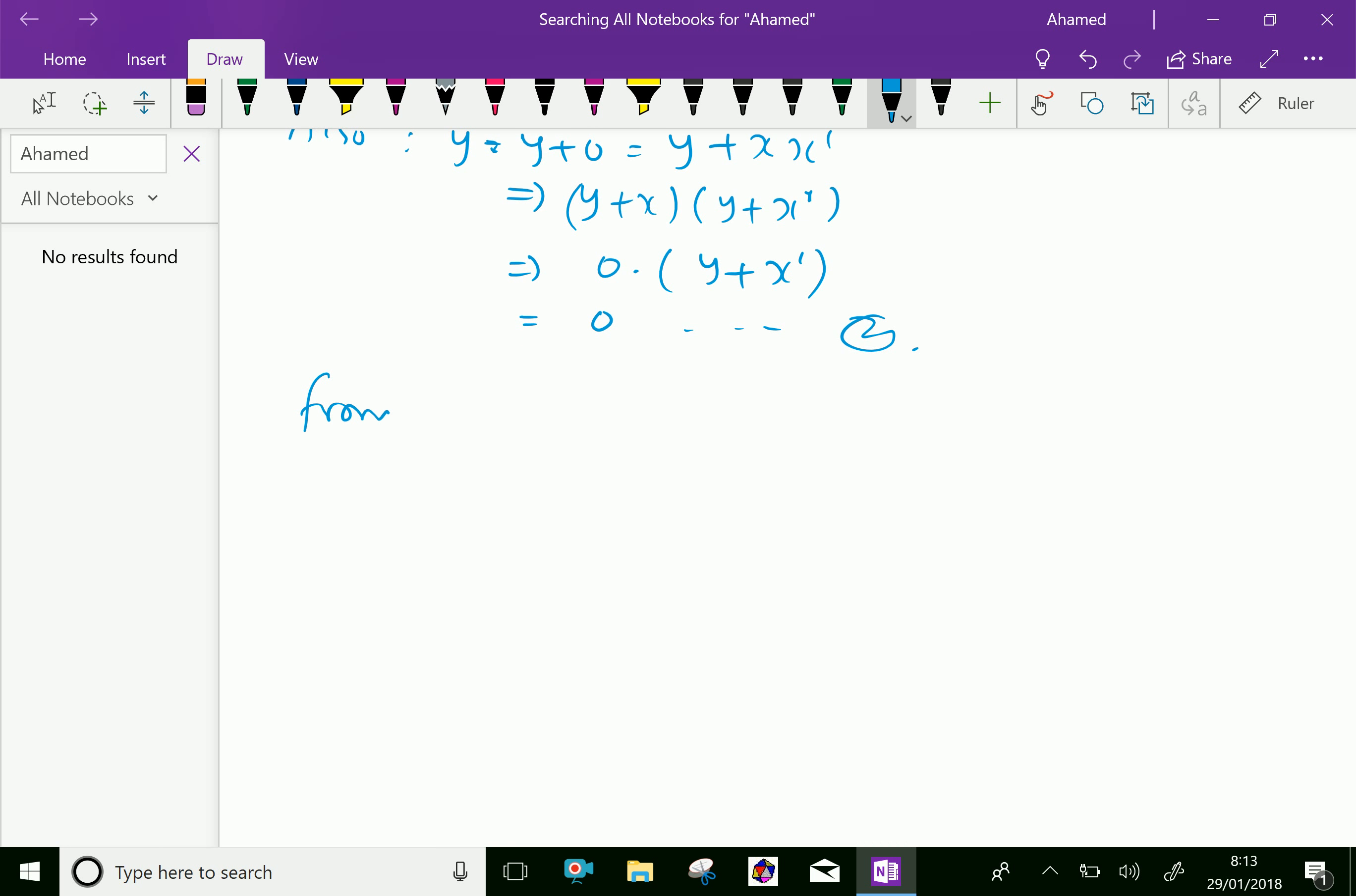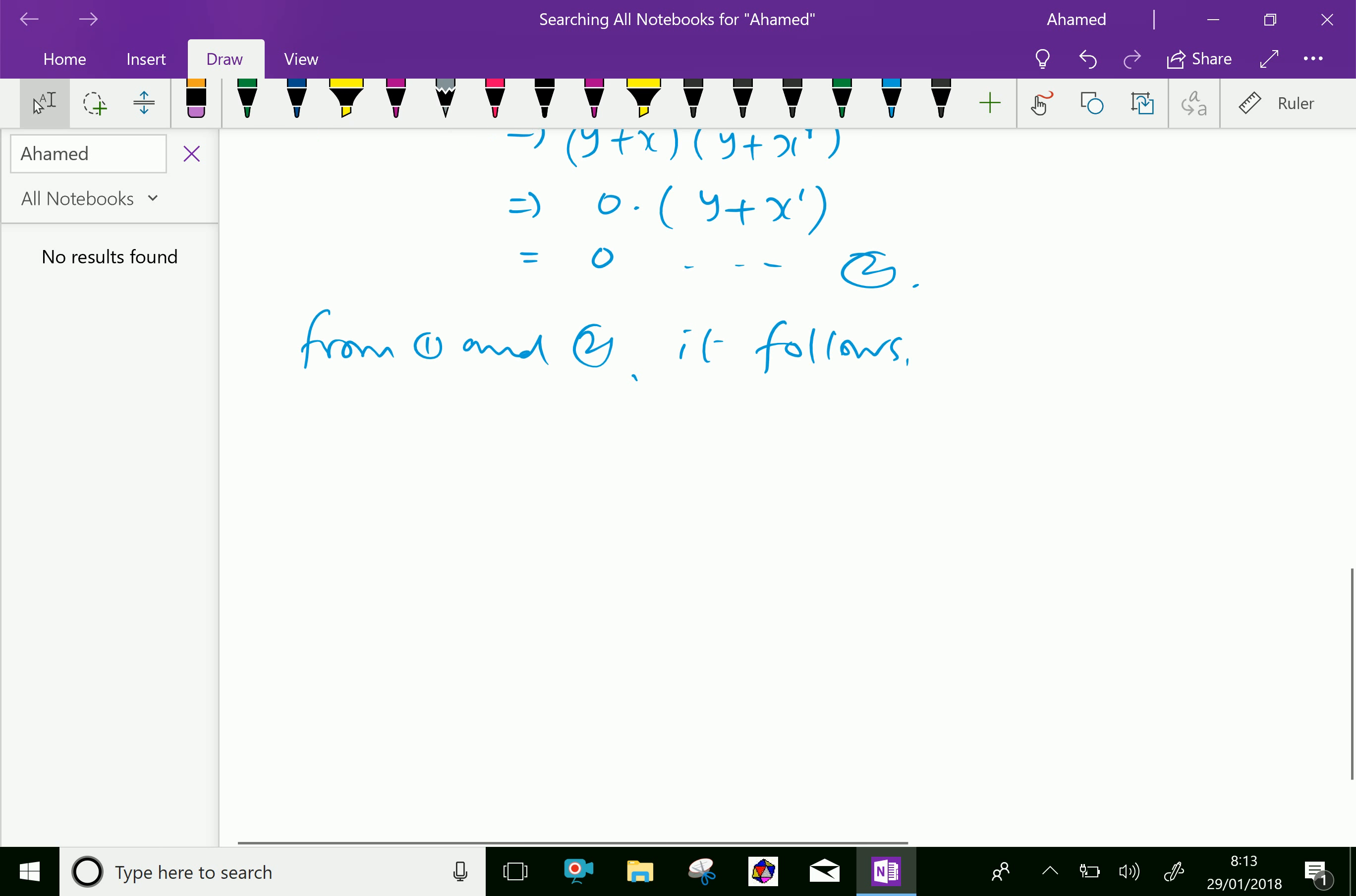From equations 1 and 2, it follows x + y = 0, which implies x = 0 = y. Hence proved. We are done.